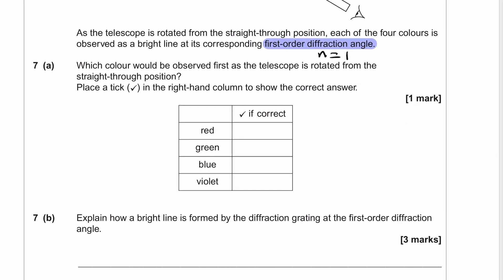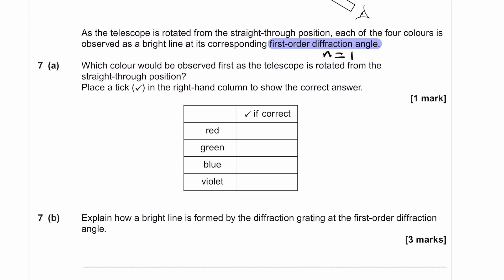Which color would be observed first as the telescope is rotated from the straight-through position? We are considering n λ = d sin θ, and the wavelength changes for each color. We are trying to see which color would be observed first — in other words, for which wavelength would θ be the smallest? Observed first means θ is the smallest.